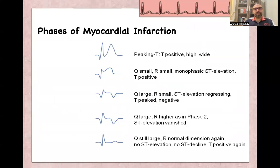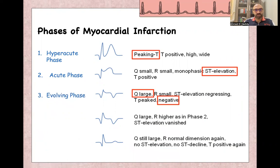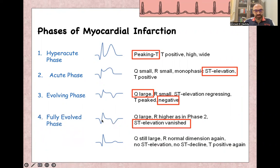There are five phases of myocardial infarction. The first phase is the hyperacute phase, where there is a peaked tall T-wave. The second phase is the acute phase, where ST elevation starts to appear with the T-wave still positive. The third phase is the evolving phase, where Q-waves start and the T-wave becomes negative. The evolved phase shows normalization of the ST segment with remaining T-wave inversion and Q-waves. In the healed phase, only the Q-wave remains.